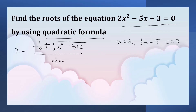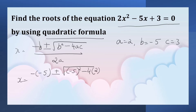Substituting the values in the formula: x is equal to minus of minus 5, plus or minus the square root of minus 5 squared minus 4 into 2 into 3, upon 2 into 2.